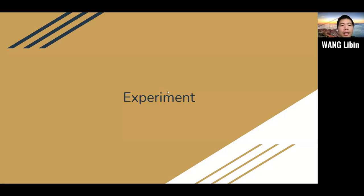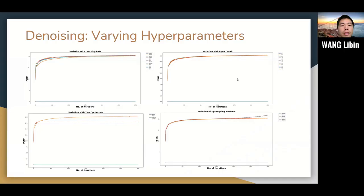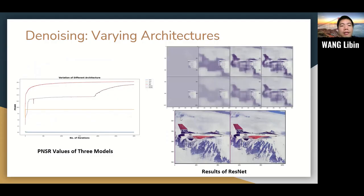Next, I will briefly summarize the experiment results. We will use peak signal-to-noise ratio, PSNR for short, to evaluate the quality of the image. Higher values would be better. For denoising, here we show the results of varying the learning rates, input depth, optimizers, and upsampling methods. In varying the learning rates and input depth, we do not see much difference. All the experiments converge very quickly within the first 1,000 iterations. We can conclude they're insensitive parameters. In the third figure, Adam performs better than LBFGS. This is consistent with common practice. Upsampling methods also do not affect much.